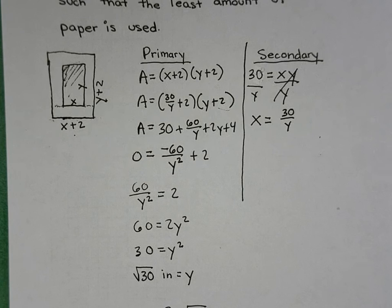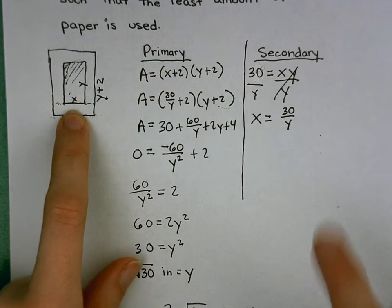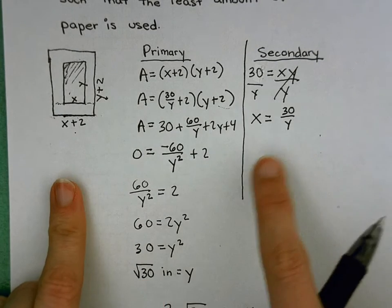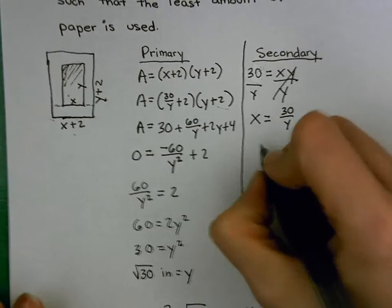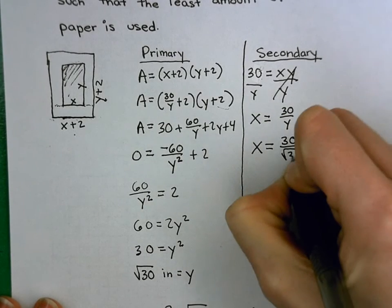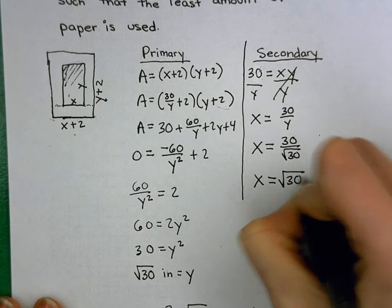On the other side, we have X and X plus 2. Well, X is right here, 30 divided by Y. If I take my root 30 and I plug it in there and then simplify, I get X equals root 30 inches.